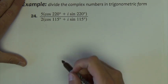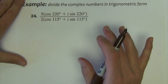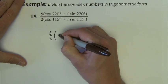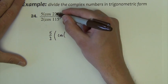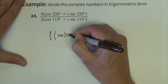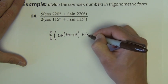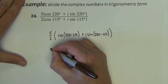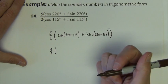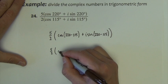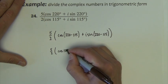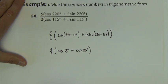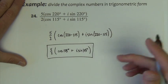Let's do a division example with complex numbers in trigonometric form. When we divide, we simply divide the R values and subtract the thetas — theta1 minus theta2. So this gives us 5/2 times (cosine(220° − 115°) + i sine(220° − 115°)). The 5 over 2 is fine as a simplified fraction. Cosine and sine of 105 degrees gives us the final answer: (5/2)(cos 105° + i sin 105°).